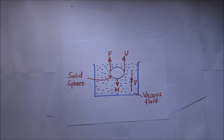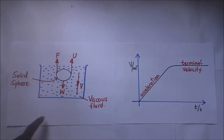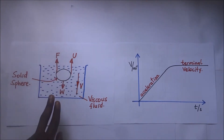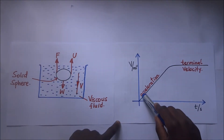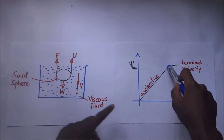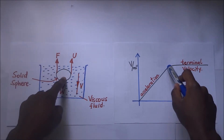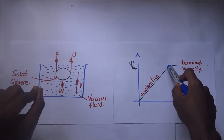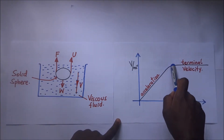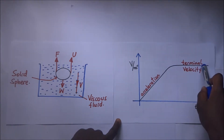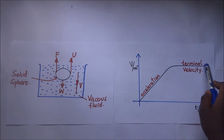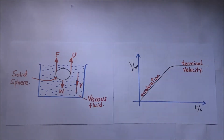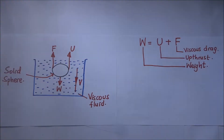Looking at this in terms of a graph: at the beginning, the weight is bigger than the upward forces, so there is acceleration due to the resultant force. But it reaches a point where the resultant force on this body is zero, and the body starts moving through the viscous fluid at a constant velocity — the terminal velocity.